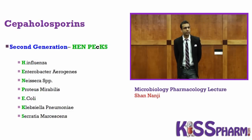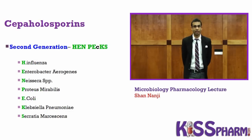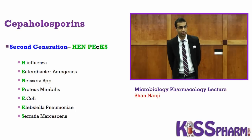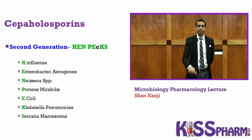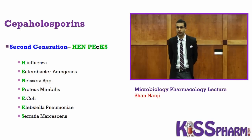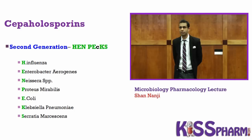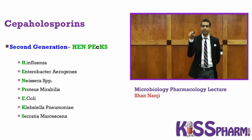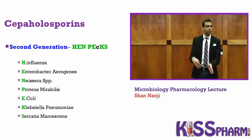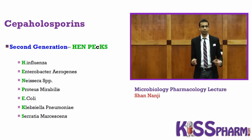Second generation cephalosporins treat 'Hen Pecs': H for H. influenzae, E for Enterobacter, N for Neisseria, P for Proteus, E for E. coli, K for Klebsiella, S for Serratia. There are only four things different between first and second generation. Two comes later in the alphabet, and two is a bigger number — so second generation treats more things than first generation.